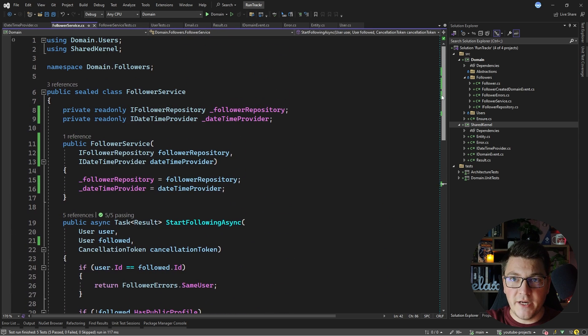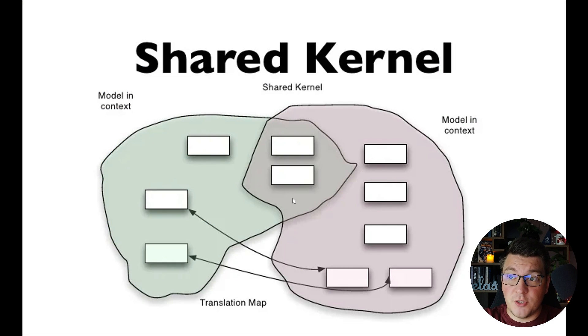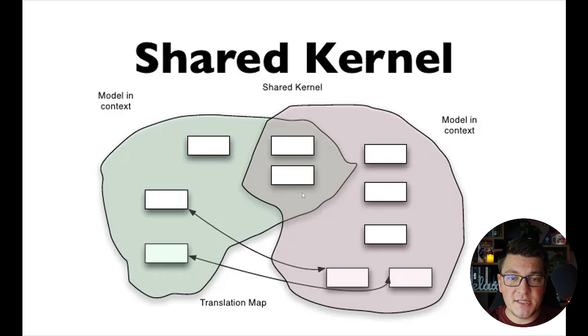There are multiple ways to distribute the shared kernel between your bounded contexts, depending on how you're building your application. If this is a monolith system with everything inside a single repository, you can have a shared project as shown in this example. Otherwise, if you're working in a microservices system with services in separate repositories, you can distribute the shared kernel as a NuGet package that all your services will reference. If you enjoyed this video about the shared kernel pattern, check out the next video on building a microservices system with RabbitMQ. Make sure to subscribe for more videos, and until next time — stay awesome.